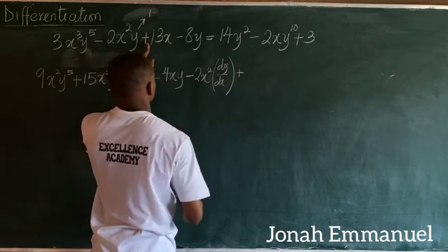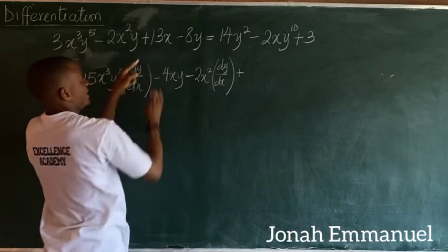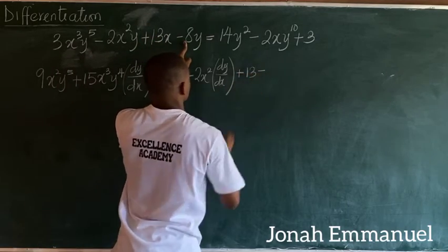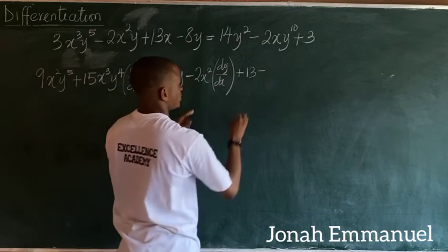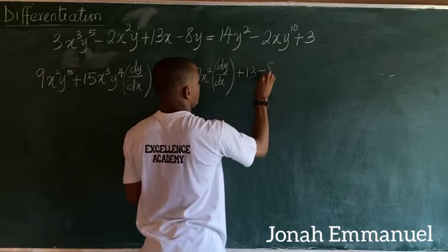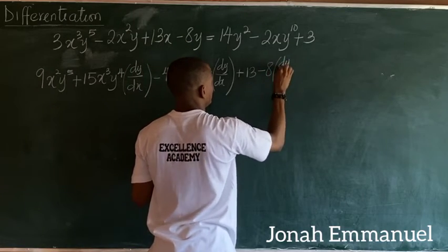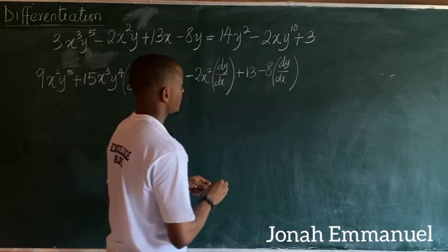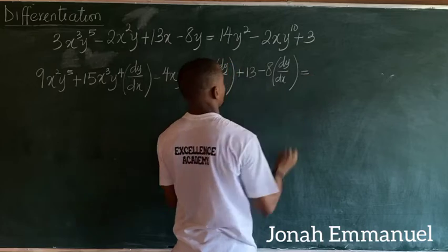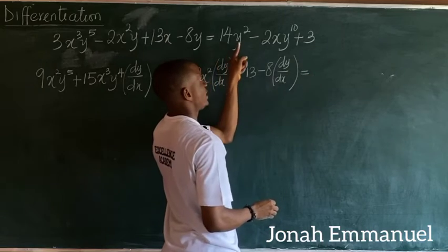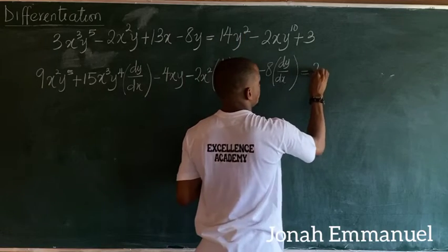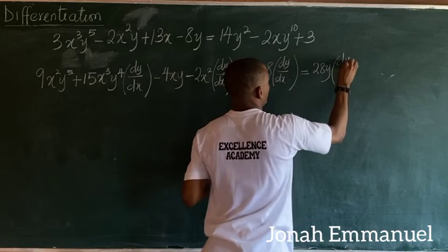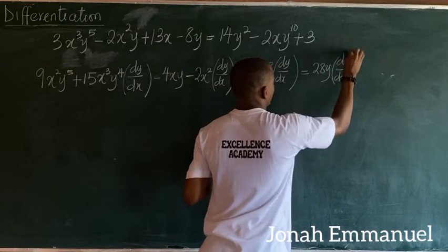Differentiating 13x gives 13. Differentiating 8y gives 8, so we include minus 8 dy/dx. On the right-hand side, differentiating 14y² gives 28y dy/dx.